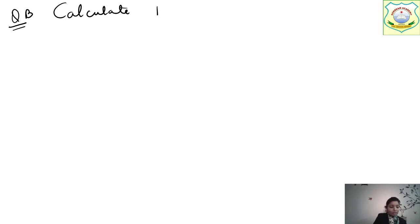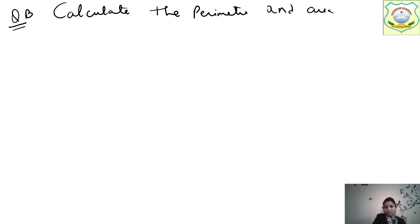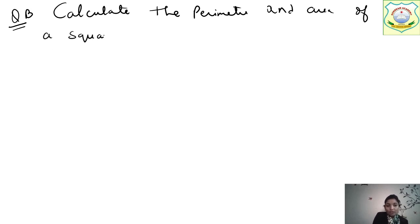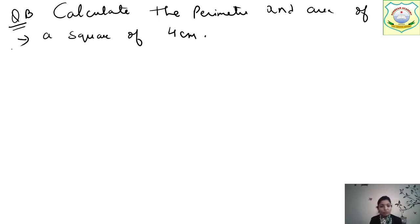Calculate the perimeter and area. I am not taking the example from the book, but if I take a square of 4 centimetres, here is the question — it is a square of 4 centimetres.